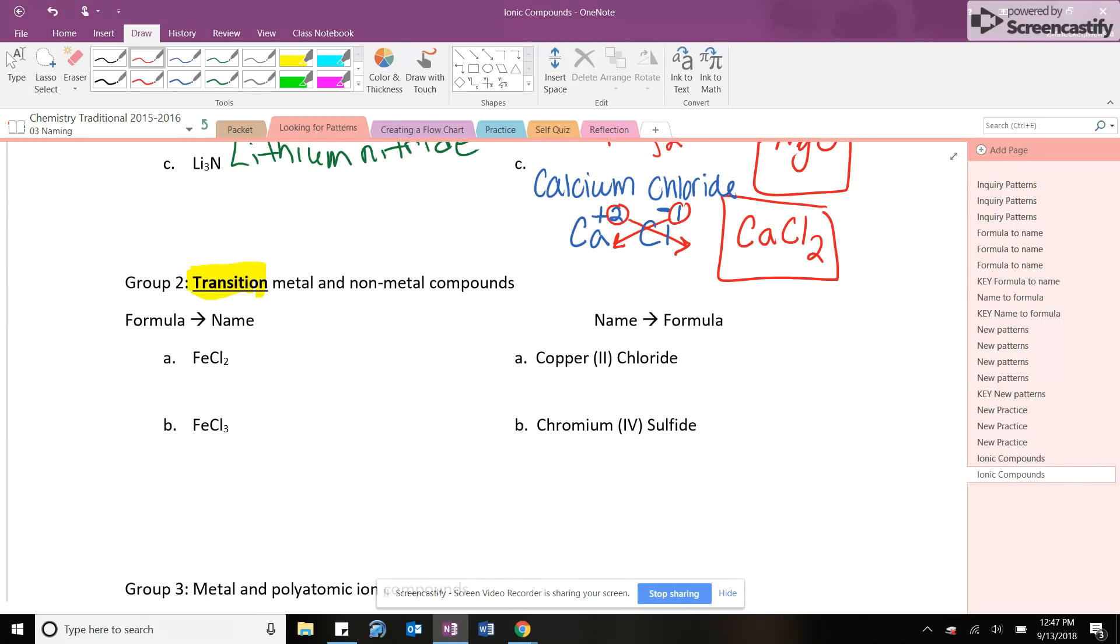So we're going to start over here with the naming to formula one. And so notice in all of these, there's a Roman numeral in here where we never had any Roman numerals before. The great thing about the Roman numeral is because we don't know the charge of copper, that Roman numeral tells us that that copper has a two charge. Now remember copper is a metal. So we now know that copper actually has a plus two charge. I hope they know the Roman numerals. I hope so too.